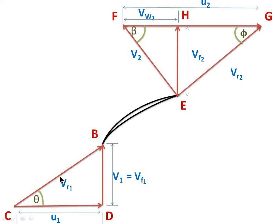The relative velocity at inlet makes an angle theta with U1. At the outlet velocity triangle, we have V2, Vr2, Vf2, Vw2, and U2 as the various velocities, with beta and phi as the two angles.